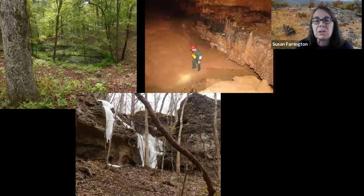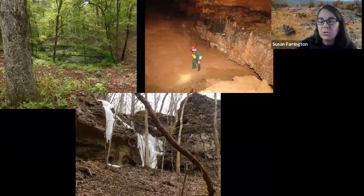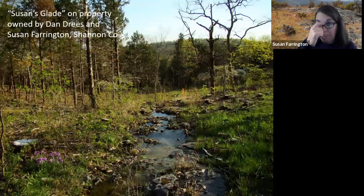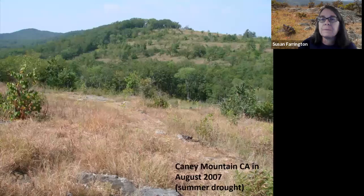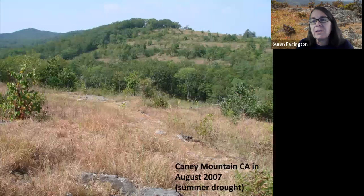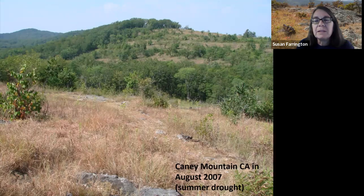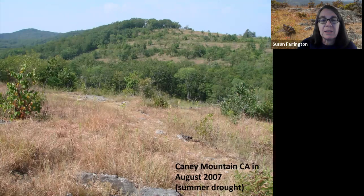Dolomite glades feature soils that are more or less excessively well-drained and very shallow, with a slightly acid to moderately alkaline soil reaction. The soil fertility is high. Dolomite breaks down into that sticky orange clay you might be familiar with if you've ever crawled around in a muddy cave. Both dolomite and limestone dissolve over time and form sinkholes, caves, natural bridges, and losing streams — this is known as karst topography. Dolomite glade soils can become saturated in winter and spring, but come July and August, those wet areas are typically bone dry. Plants have to be adapted to some really tough extremes to survive on a glade.